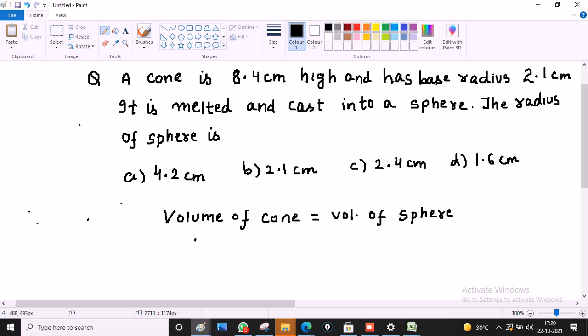Volume of cone is 1 by 3 pi R square H, and we will not solve pi. Why? Because we have a cancellation. 1 by 3 pi 2.1 whole square into 8.4. This is equal to 4 by 3 pi R cube.